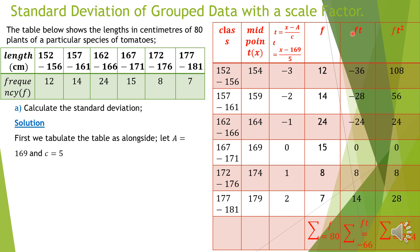We then proceed to the column of FT, which simply means multiply F times T. So: 12 × (−3) = −36; 14 × (−2) = −28; 24 × (−1) = −24; 15 × 0 = 0; 8 × 1 = 8; and 7 × 2 = 14. Summing these: −36 + (−28) + (−24) + 0 + 8 + 14 gives a total of −66. So the summation of FT is −66.